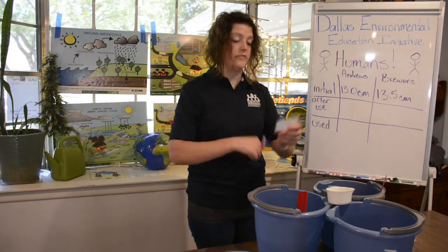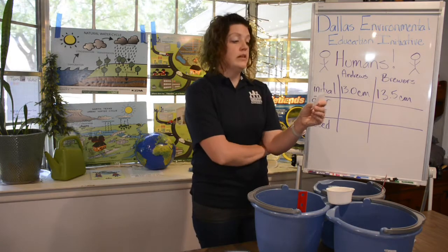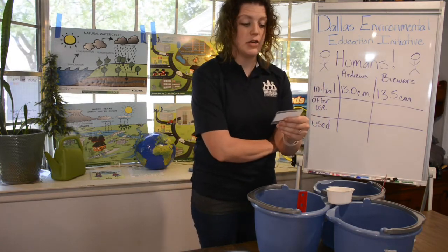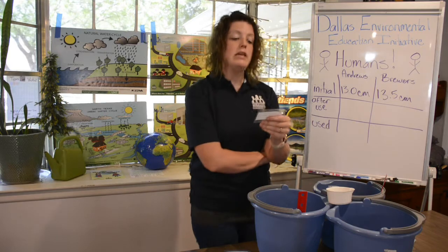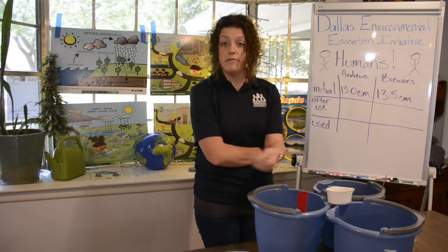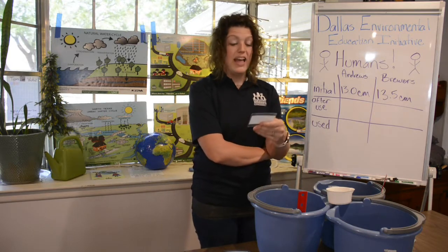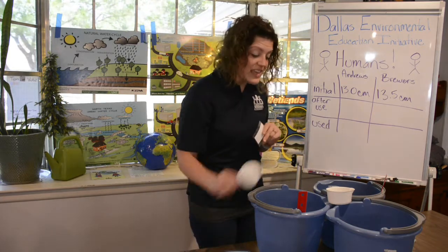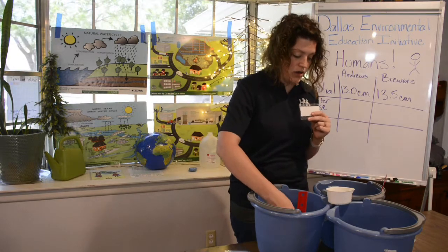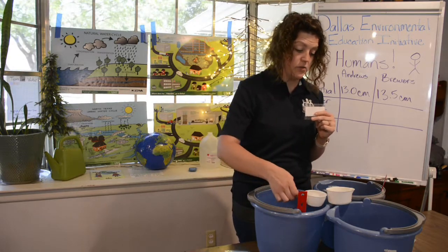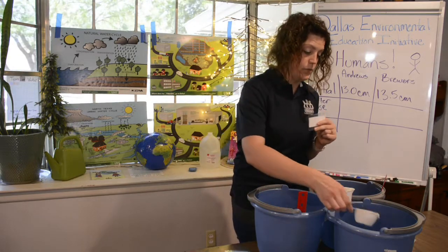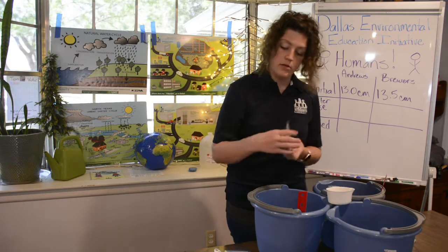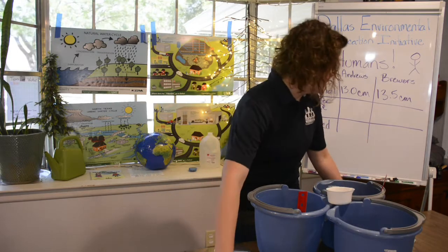Speaking of leaks — in the Brewer's house, Bob knows that his sink faucet drips but keeps forgetting to ask his dad to help him fix it. That's half a cup of water. Leaks can waste a lot of water if we don't get them repaired.